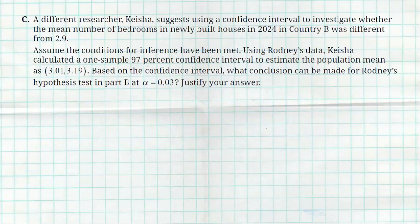Moving on to part C: a different researcher, Kaisha, suggests using a confidence interval to investigate whether the mean number of bedrooms in newly built houses has changed from 2.9. Using Rodney's data, she calculates a one-sample 97% confidence interval, and her interval is 3.01 to 3.19. Based on this, what conclusion can be made for Rodney's hypothesis test at a significance level of 0.03?